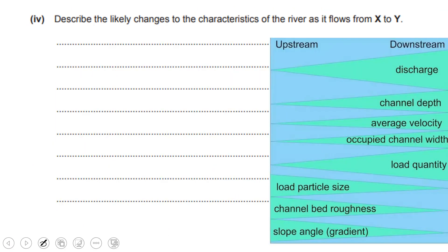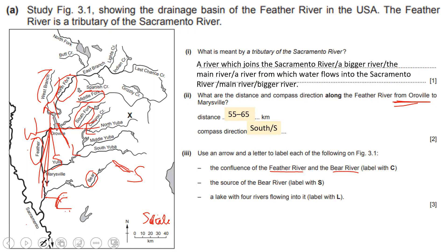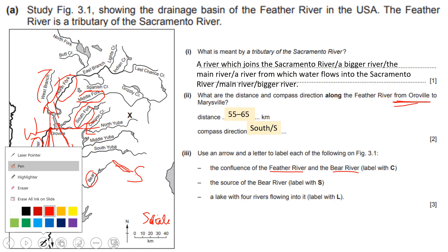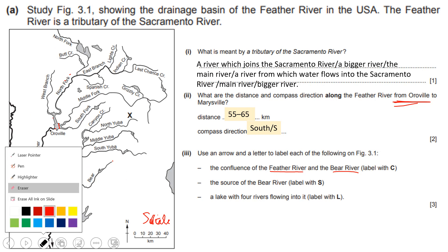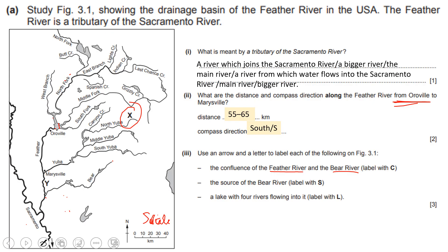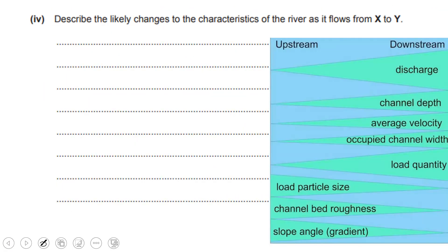Describe the likely changes to the characteristics of the river as it flows from X to Y. X is where the river starts — the upland part — and Y is moving downward towards the mouth. So you are looking at a river profile moving from upstream (source) to downstream (mouth).